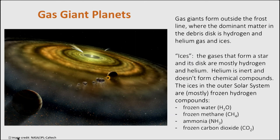What about gas giant planets? They form outside the frost line, where the dominant matter in the debris disk is hydrogen and helium gas, and associated ices from compounds involving hydrogen. We need to talk about how astronomers define the word 'ices.' Most of the material in a young solar system, or in the Sun itself, is hydrogen and helium, and the disk that forms around the star is also mostly hydrogen and helium. Helium is inert and doesn't form compounds, so it is essentially remote from the processes of molecular formation and the formation of rocks and ices.